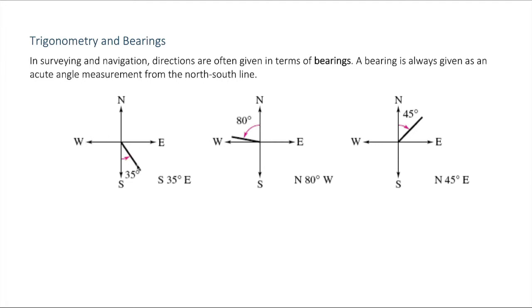So you can see this angle here. We start by saying this makes an acute angle with the south line, so we start with south. The angle it makes is 35 degrees, and that angle is pointing in the eastward direction. So it's south 35 degrees east. That's how bearings are given, and this is most often used in navigation and surveying.